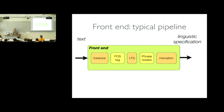From an engineering point of view, this is a terrible architecture because we get a cascade of errors. None of these things are perfect. Any error we make early on — for example in tokenization, if we cut something that should have been one word into two parts — it's very unlikely that further down the pipeline anything will think to glue them back together. Part-of-speech tag errors too: if we tag something as a noun when it should have been a verb with a different pronunciation, we're probably not going to recover from that.